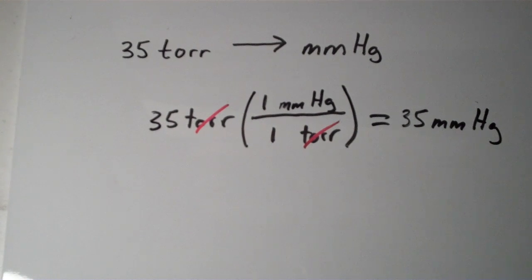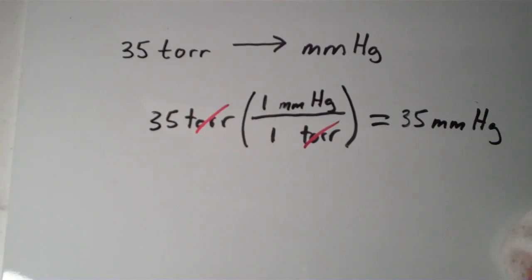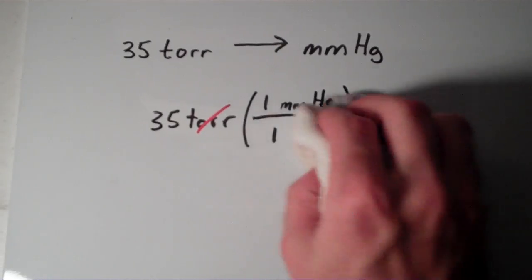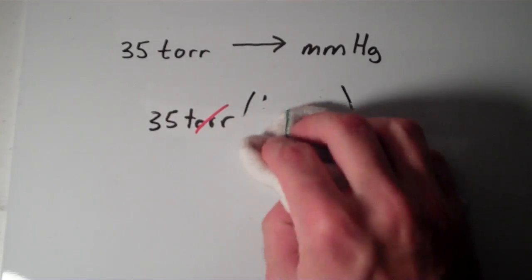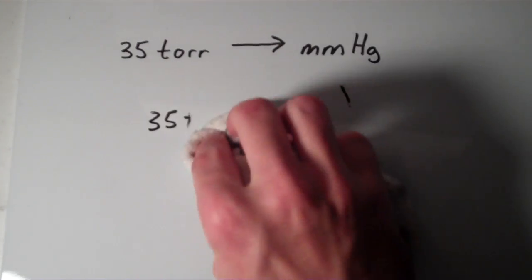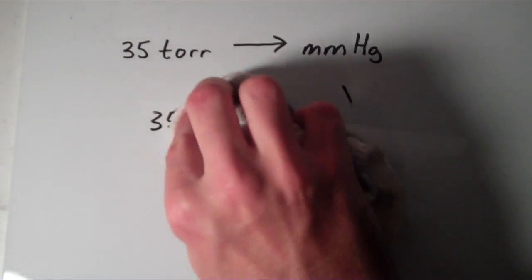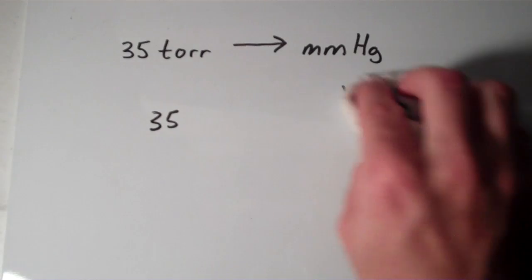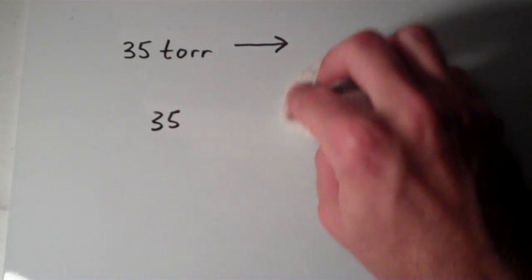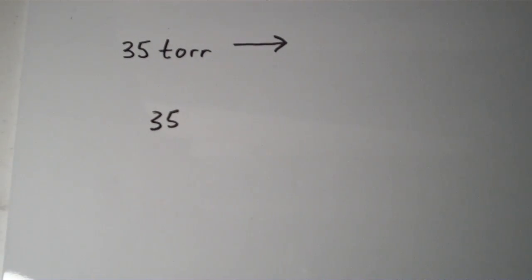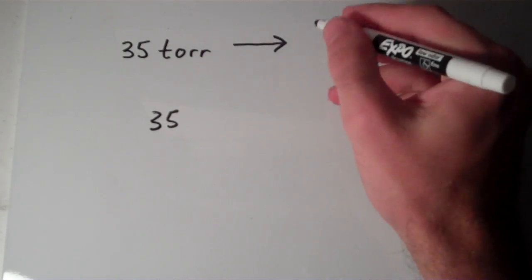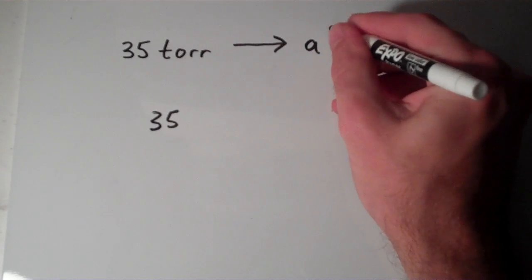So that one was pretty easy. Let's try one that's slightly harder. Suppose instead of converting to millimeters of Hg, suppose I wanted to convert the 35 Torr into atmospheres — ATM.